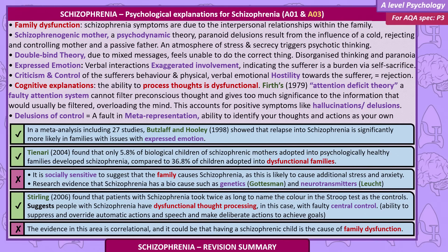Double bind theory: due to mixed messages, the individual feels unable to do the correct thing, leading to disorganised thinking and paranoia. Expressed emotion includes verbal interactions that exaggerate involvement, indicating the sufferer is a burden through self-sacrifice, criticism and control of the sufferer's behaviour, and physical and verbal emotional hostility towards the sufferer, equalling rejection.